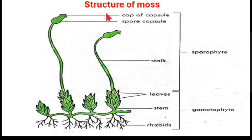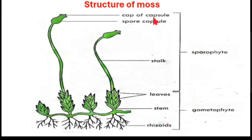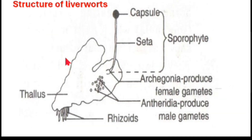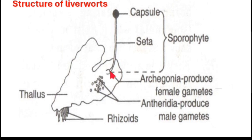This is the structure of a moss plant. You have the spore capsule, the stalk — these are all part of the sporophyte. Then you have the gametophyte, which includes the leaves, the stem, and the rhizoids. This is the structure of a liverwort. You have the capsule and the seta as the sporophyte. Here we have the archegonia which produce the female gamete, and the antheridia which produce the male gamete, and then the rhizoids. The flat body structure is called the thallus.